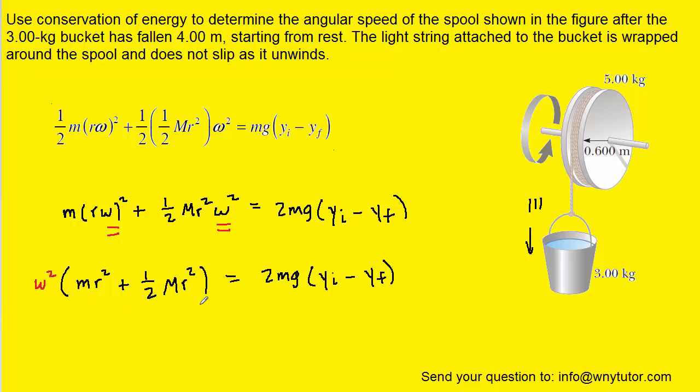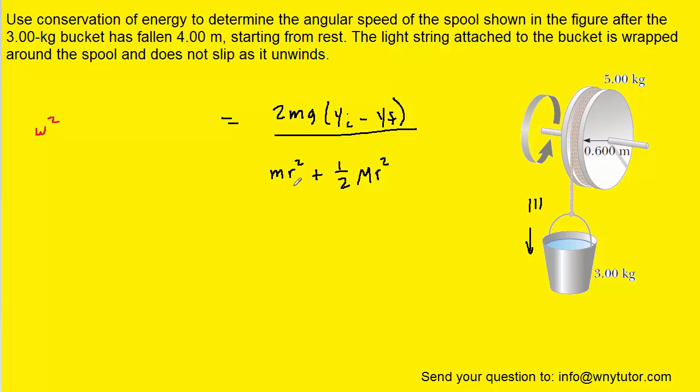We can next divide both sides of the equation by this term here in parentheses, which essentially will move it over to the right side. We'll next take a look at the denominator and notice that r squared appears in both terms, so we can factor that out.